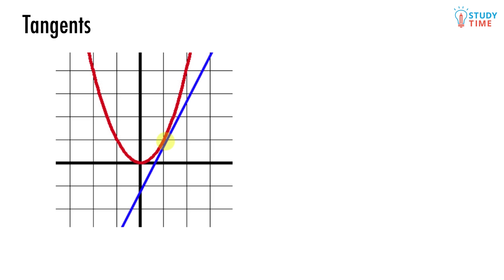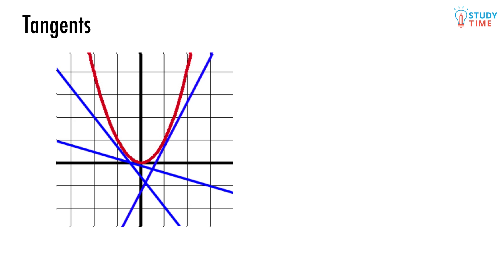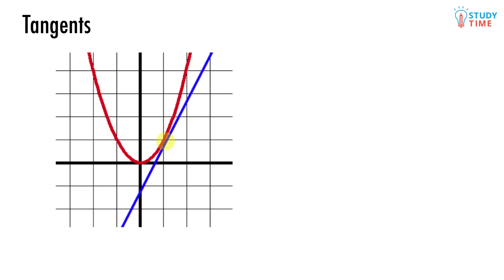Of course, this line here isn't the only tangent for the parabola. There's millions of possible tangents. The location of the point of tangency here is about where x equals 1.